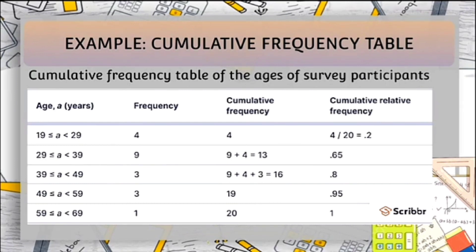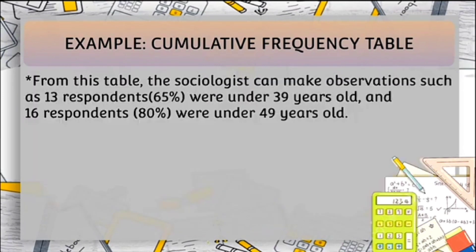Our sample size is 20. For the cumulative relative frequency: in the first row, 4 divided by 20 equals 0.2. 13 divided by 20 equals 0.65. 16 divided by 20 equals 0.8. 19 divided by 20 equals 0.95. And lastly, 20 divided by 20 equals 1. From this table, the sociologist can make observations such as that 13 respondents, or 65%, were under 39 years old, and 16 respondents, or 80%, were under 49 years old.